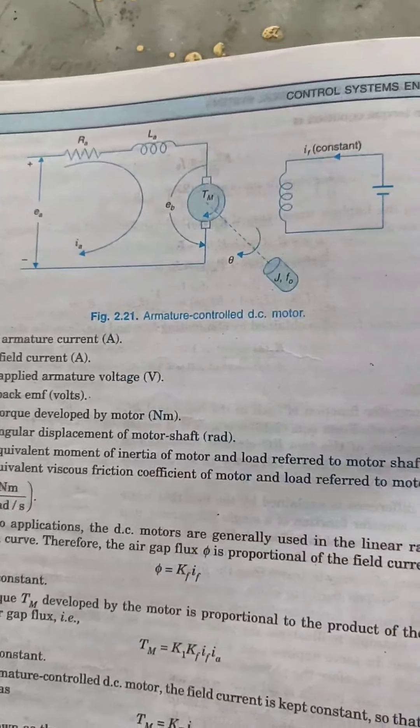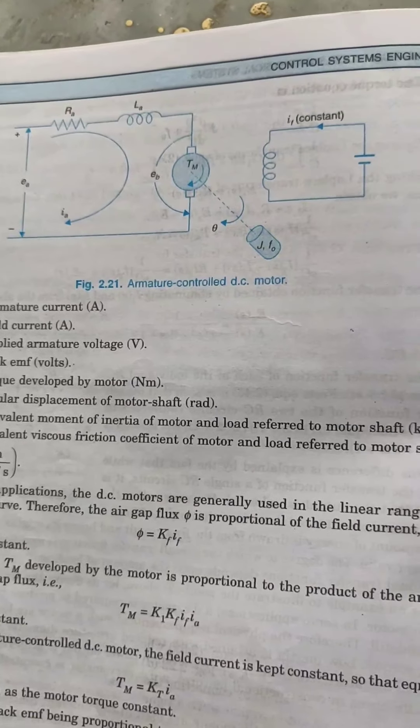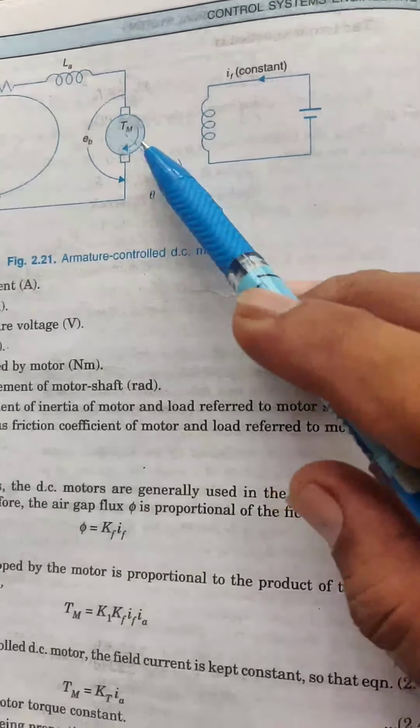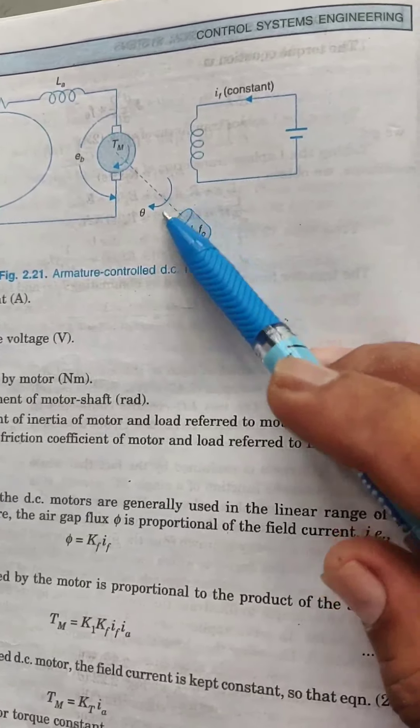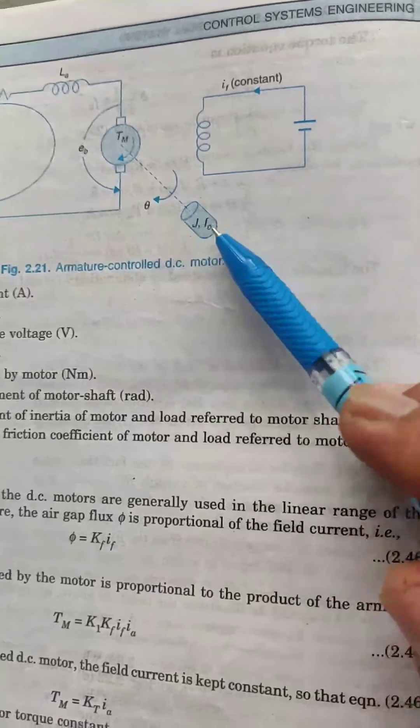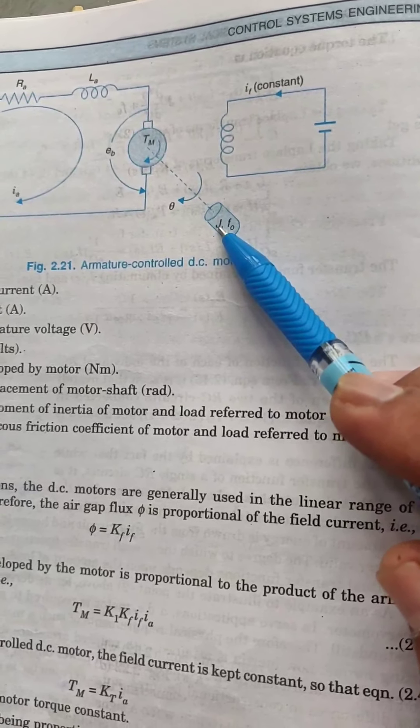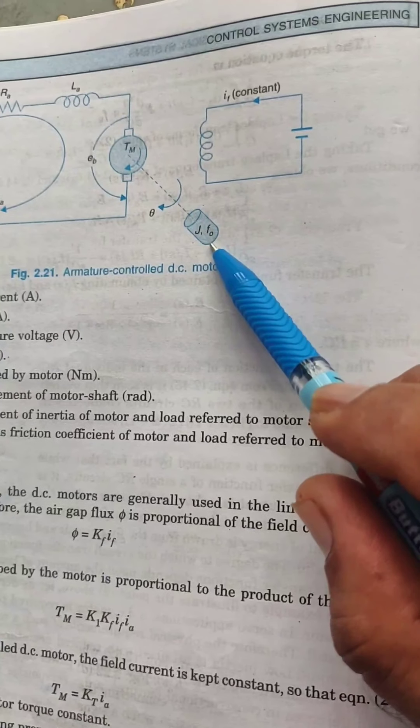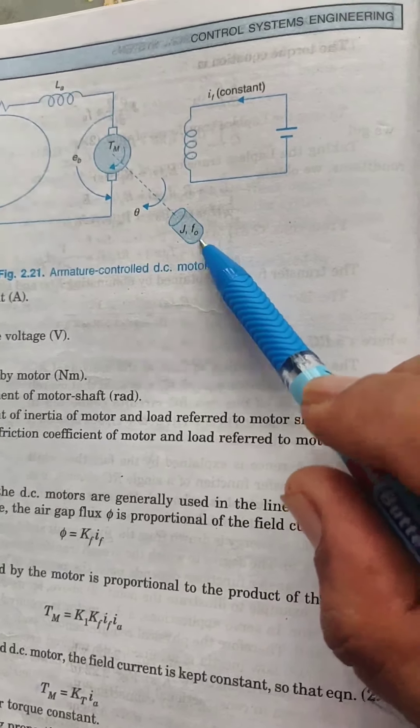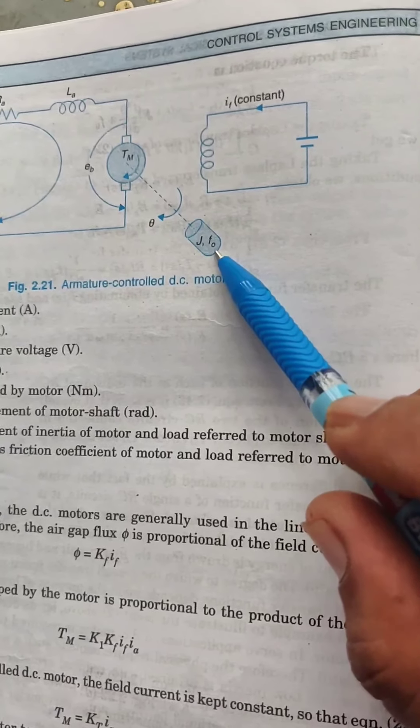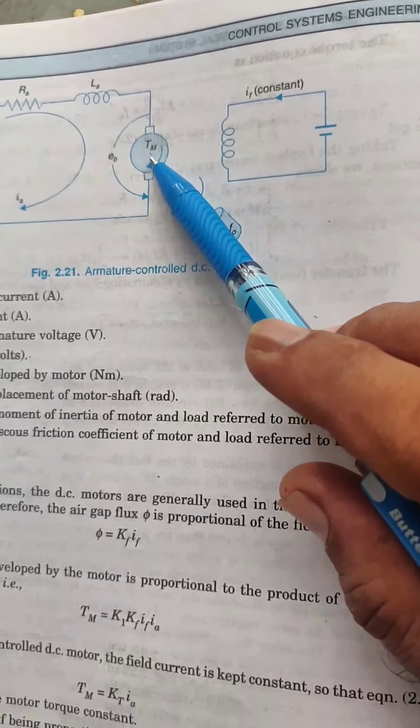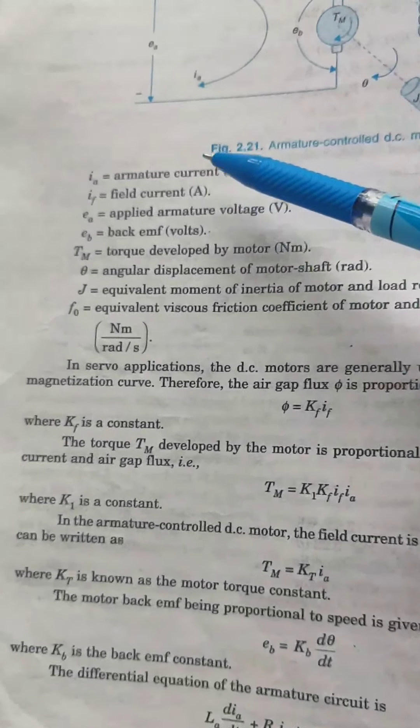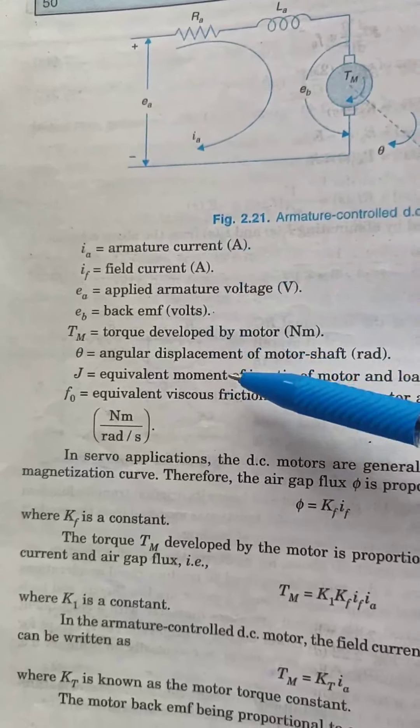A simple derivation is used for finding the transfer function. These are the load side as shown in the diagram. Angular displacement is theta, J is moment of inertia of the load referred to the armature side of the motor, and F0 is the viscous friction force of the load referred to the armature of the motor side.